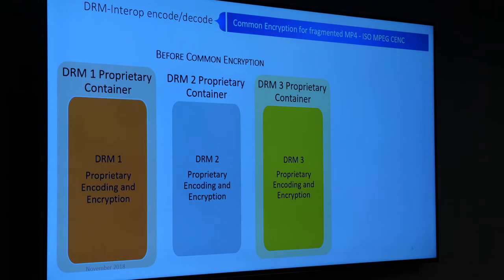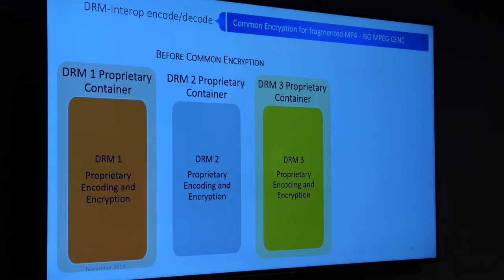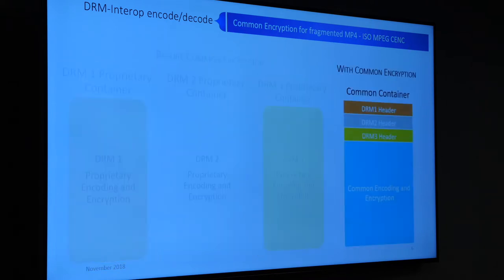I want to briefly touch on why common encryption matters — without it, none of this is possible. You would either have to have one DRM for the planet, which is unimaginable because there are legal aspects to that, or you had to have some way of having multiple DRMs decode the same content using a common standard. Once that was done, it made it possible to go where we're going now with large-scale distribution of media over the web.